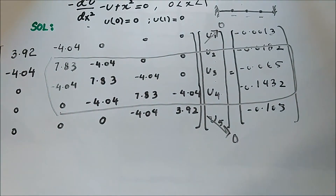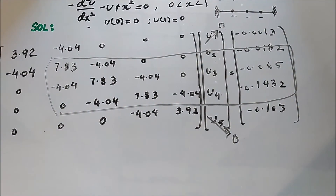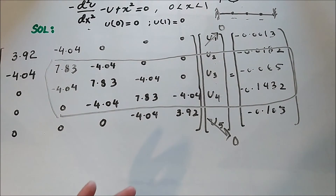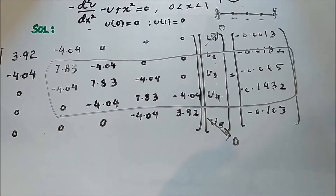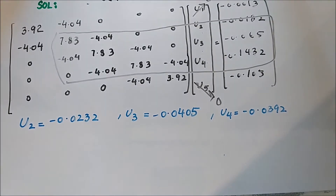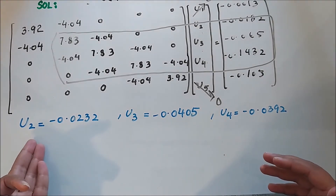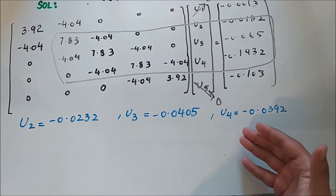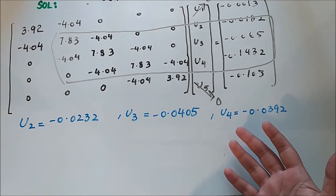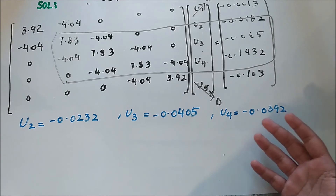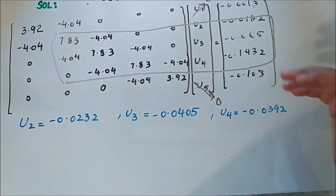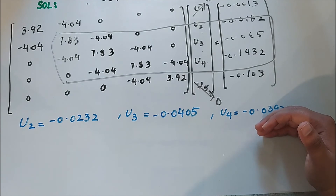I'll write the answers for U2, U3, and U4 — it's your task to verify you get the same values. These are the values for U2, U3, and U4, which is the main result: finding the displacement vector for this system.